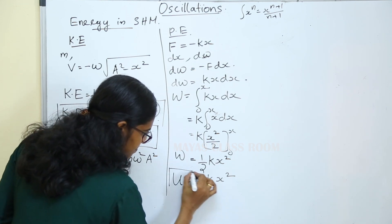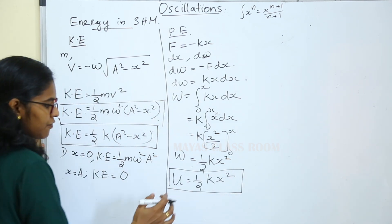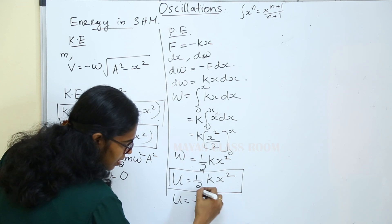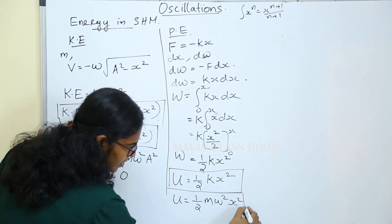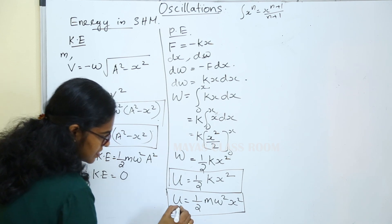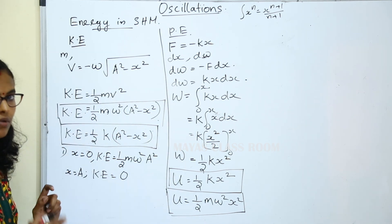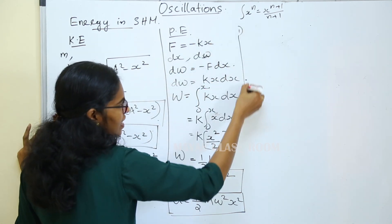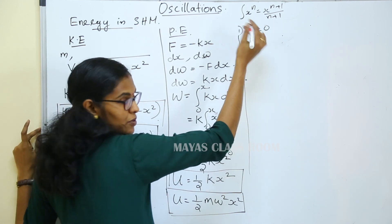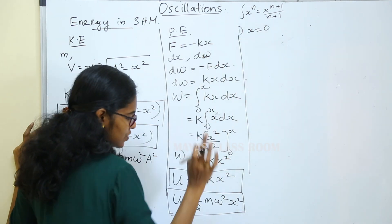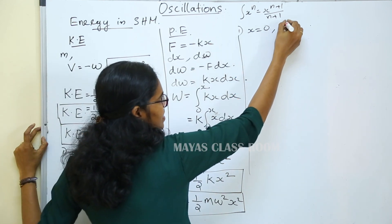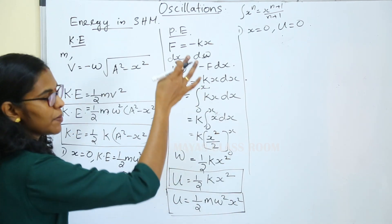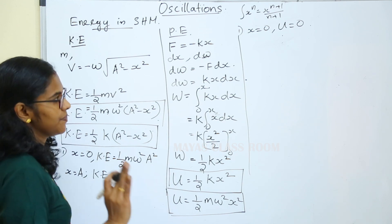The potential energy equation is U equal to half k into x squared. If k is equal to m omega squared, then potential energy U is equal to half m omega squared into x squared. This is the potential energy of simple harmonic motion. In the mean position, x is equal to 0, then potential energy is equal to 0. Clear?